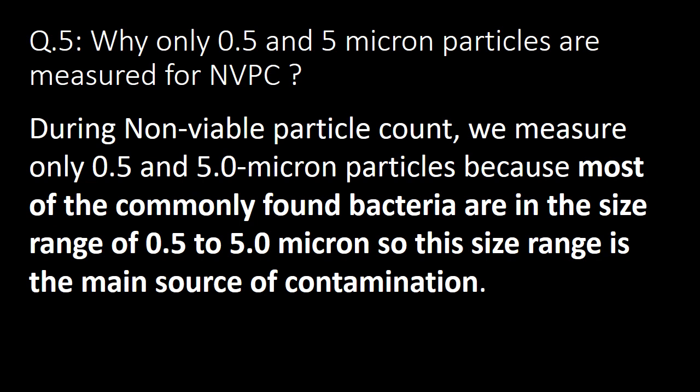Why are only 0.5 and 5 micron particles measured for non-viable particle count? During non-viable particle count we measure only 0.5 and 5 micron particles because most commonly found bacteria are in the size range of 0.5 to 5 micron, so this range is the main source of contamination.